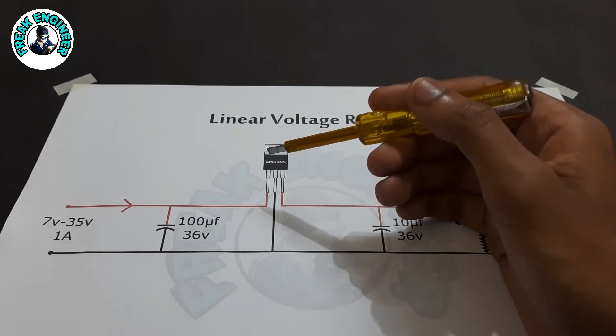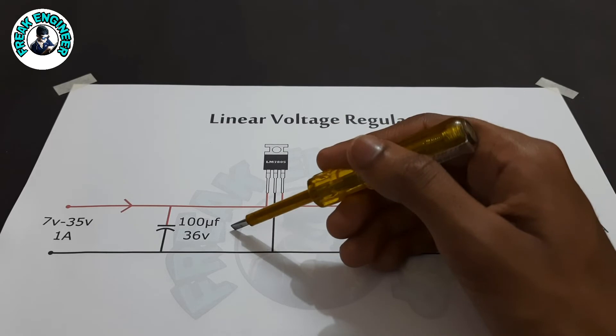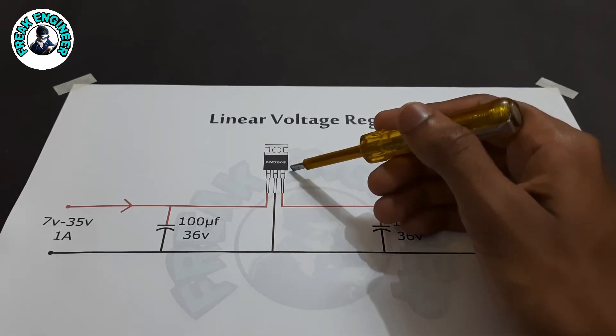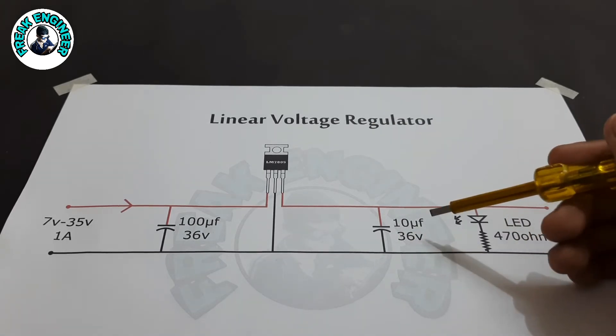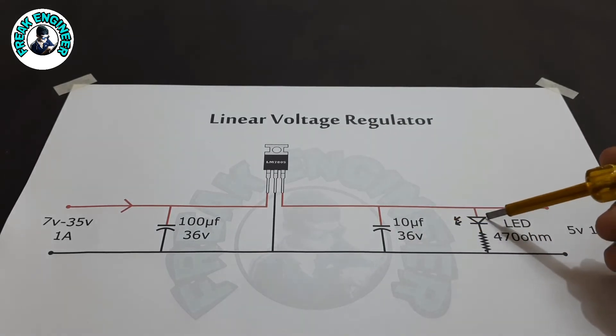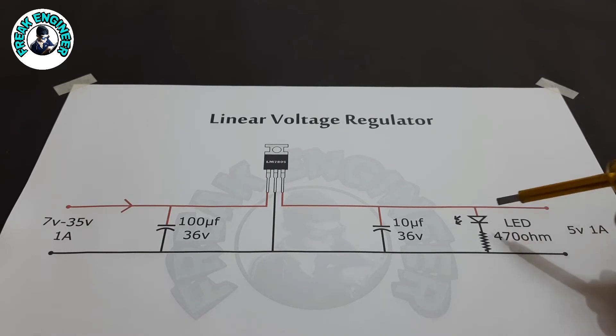For smoothing DC, I have used 100 microfarad 36 volt capacitor on input, and this is 7805 IC. This is the output capacitor of 10 microfarad 36 volts, and this is the LED for indication purpose with the 470 ohm protecting resistor.